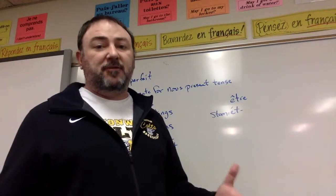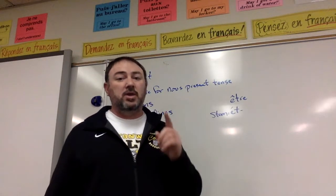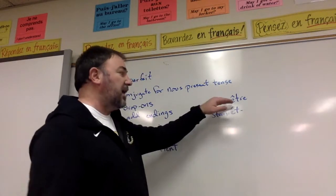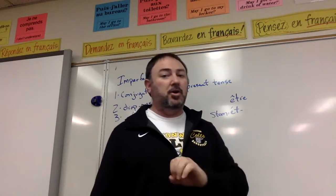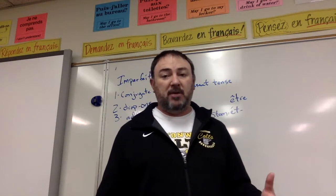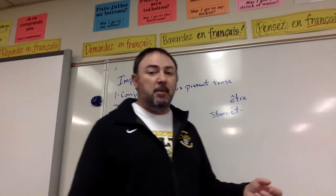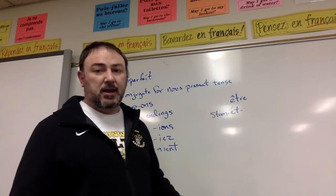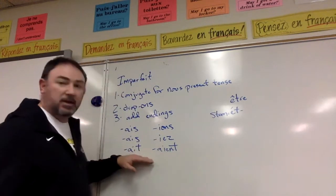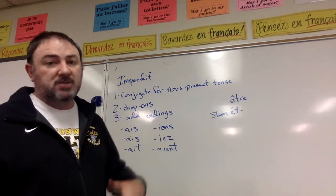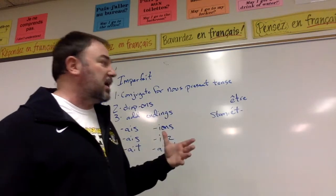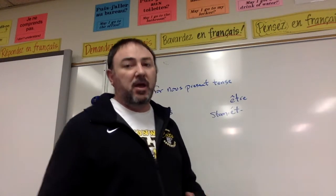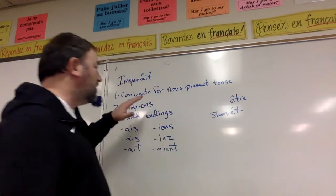Now, the good thing about this verb tense is that there is only one irregular verb in l'imparfait, and that is the verb être. Être is the only one — there are no other verbs that are irregular in l'imparfait. For the stem of être, it is É — E with an accent aigu — T, and then you add the same endings as you would for every other verb. So this makes l'imparfait pretty easy to conjugate. Être is the only irregular verb; every other verb follows this pattern.